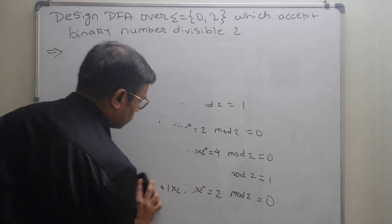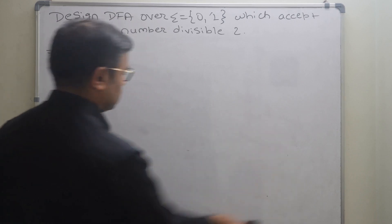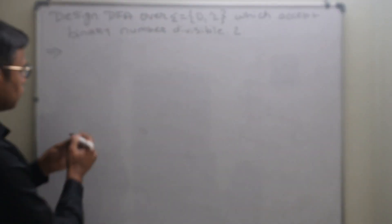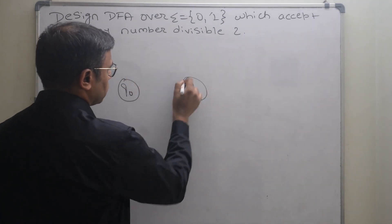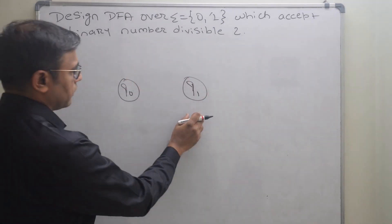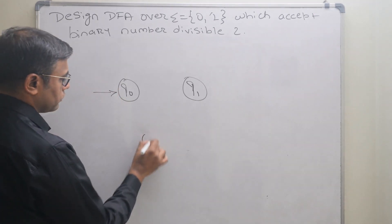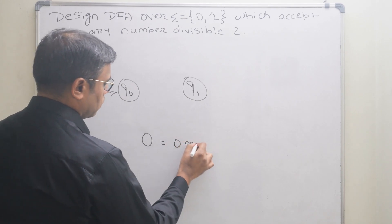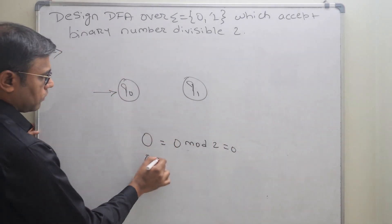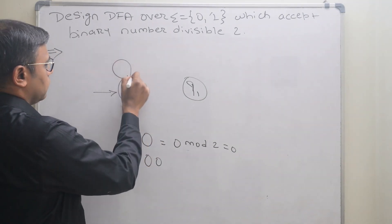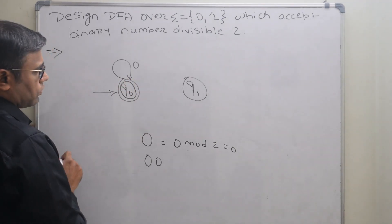I will draw two states: q0 and q1. q0 represents remainder 0 and q1 represents remainder 1. Now let us trace strings one by one. If we take input 0, then 0 mod 2 is 0, so we stay in q0. There can be any number of 0s, so we apply a self-loop on q0. This will be the final state.